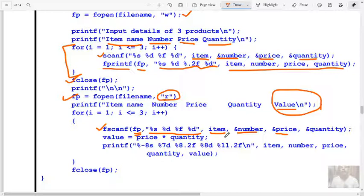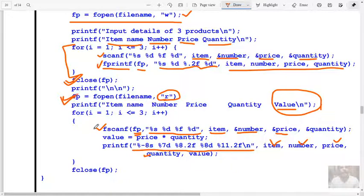This is the formatted control string, you can go through it: minus 8s, 7d, 8.2f, 8d, 11.2f. You know this already. Those information are displayed in the monitor by using printf. Using scanf I will input the data, using fprintf data is sent to file. Once the loop is completed file is closed, reopen the file in read mode, read from the file by using fscanf and display the information using printf.